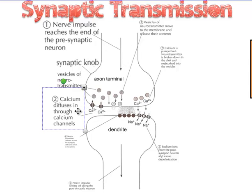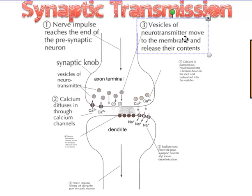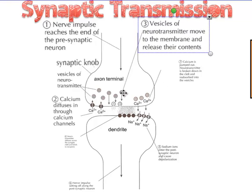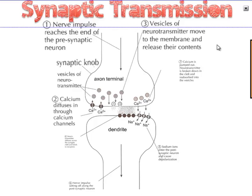The calcium ions diffuse into the axon terminal end, and when that happens it allows vesicles containing neurotransmitters to move. Vesicles — remember, it sounds like vehicles. Think of it as a little car whose whole purpose is to drive up and release its contents. These vesicles are moving towards the membrane, and they're going to fuse with the cell membrane of the axon terminal. This is an example of exocytosis.